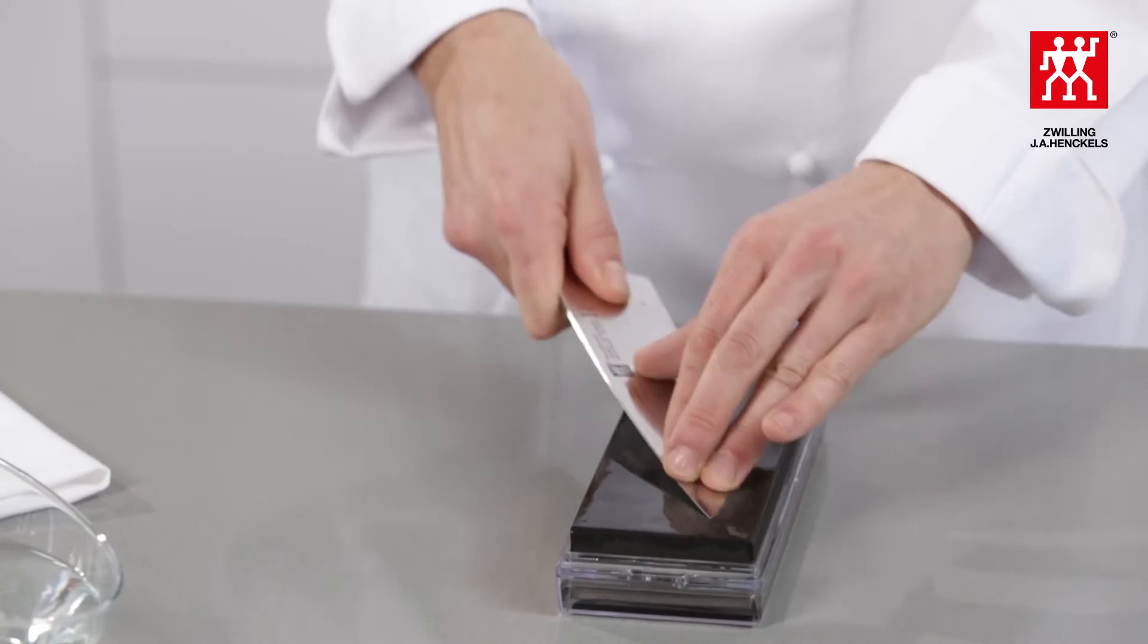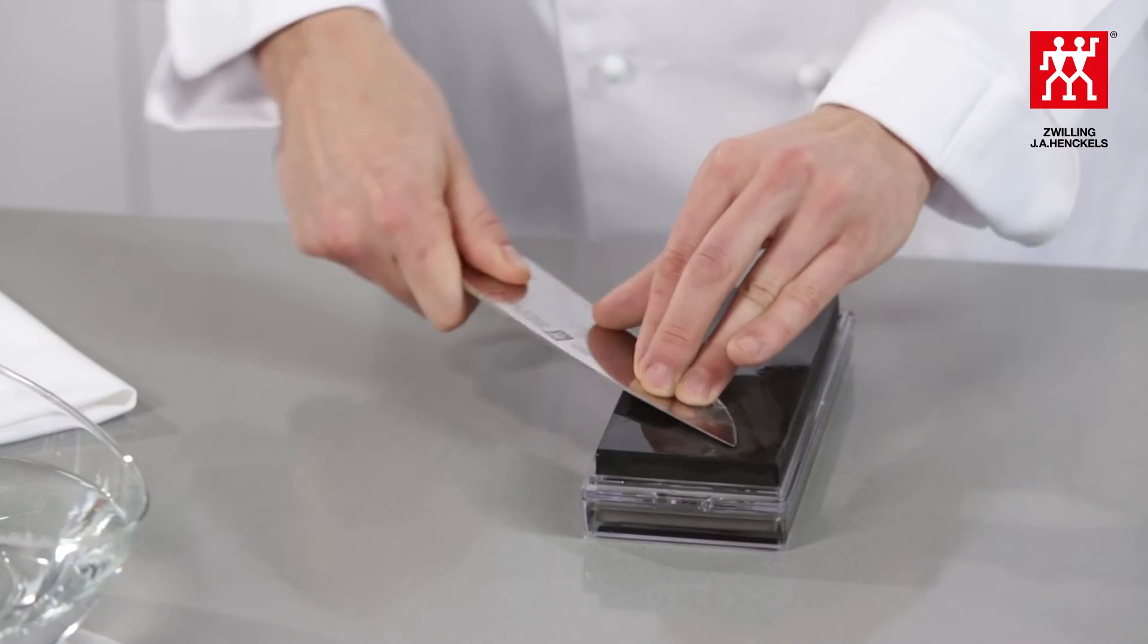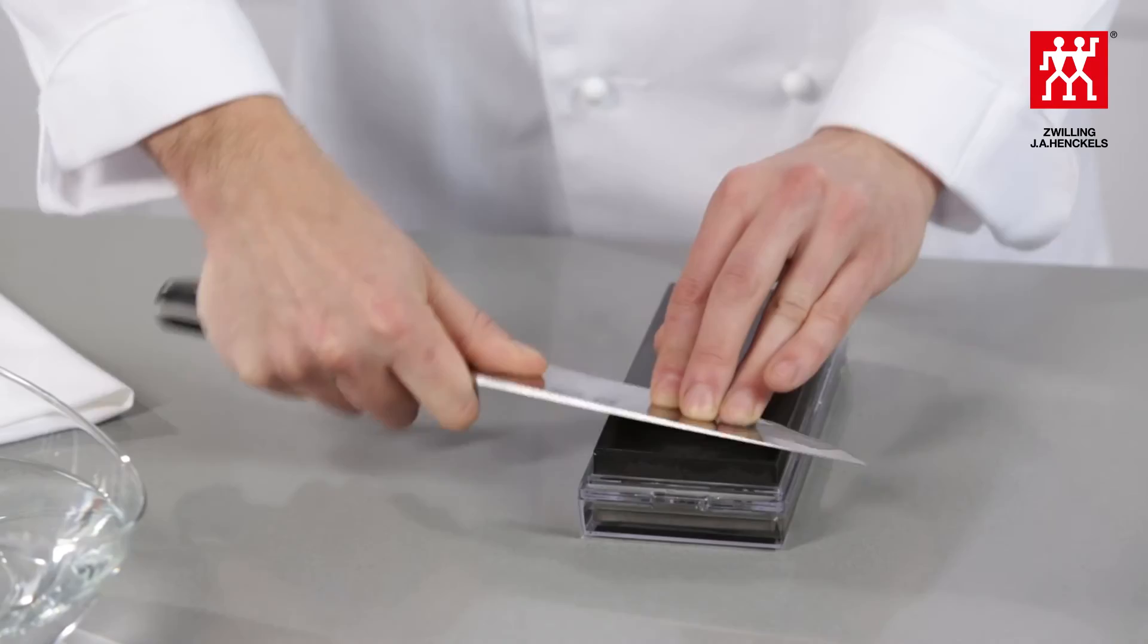Use two coins to help you judge the correct grinding angle. Speed is unimportant here. Start with the tip of the knife. Exert even moderate pressure when you draw the knife across the stone. Using fluid movements, move on to the other parts of the blade.